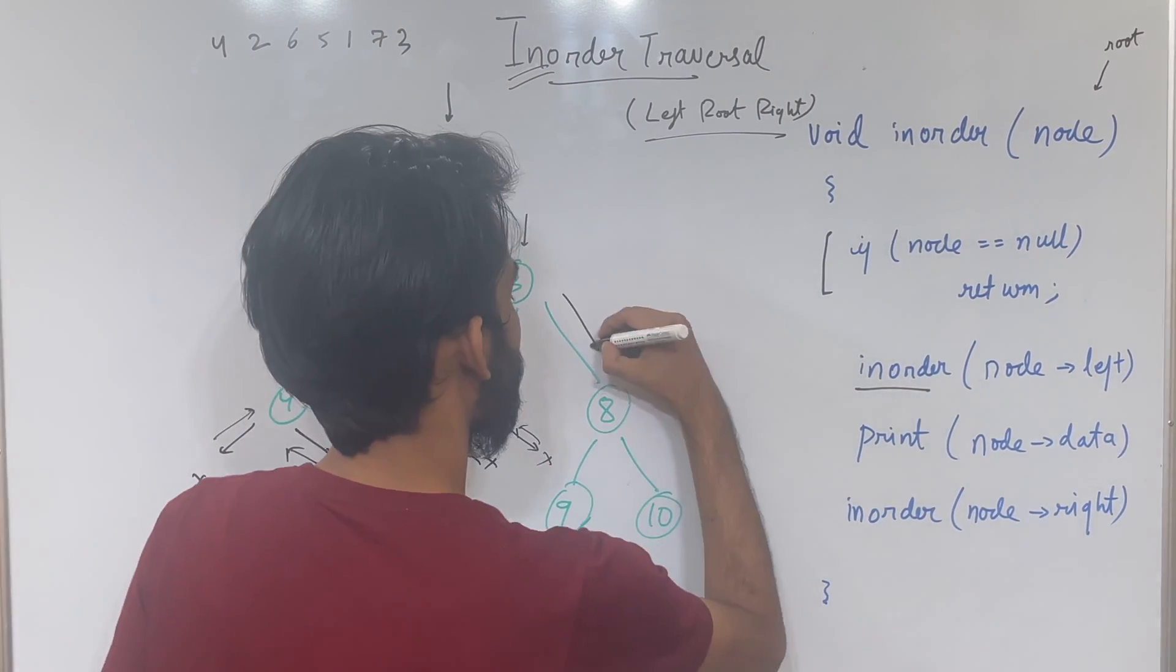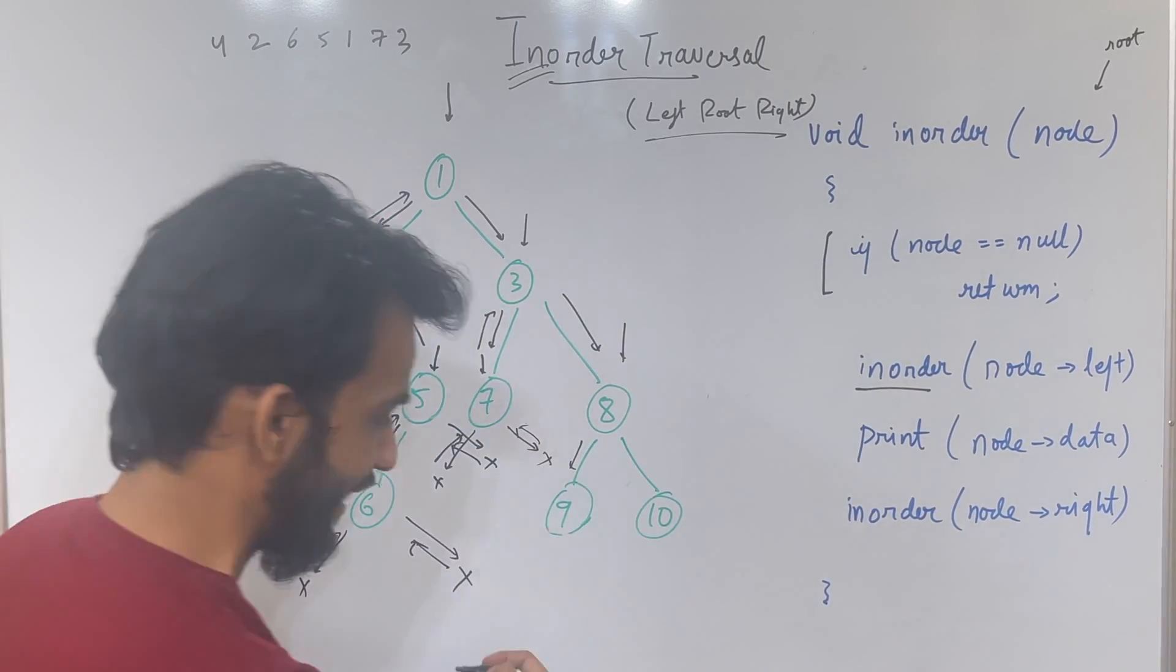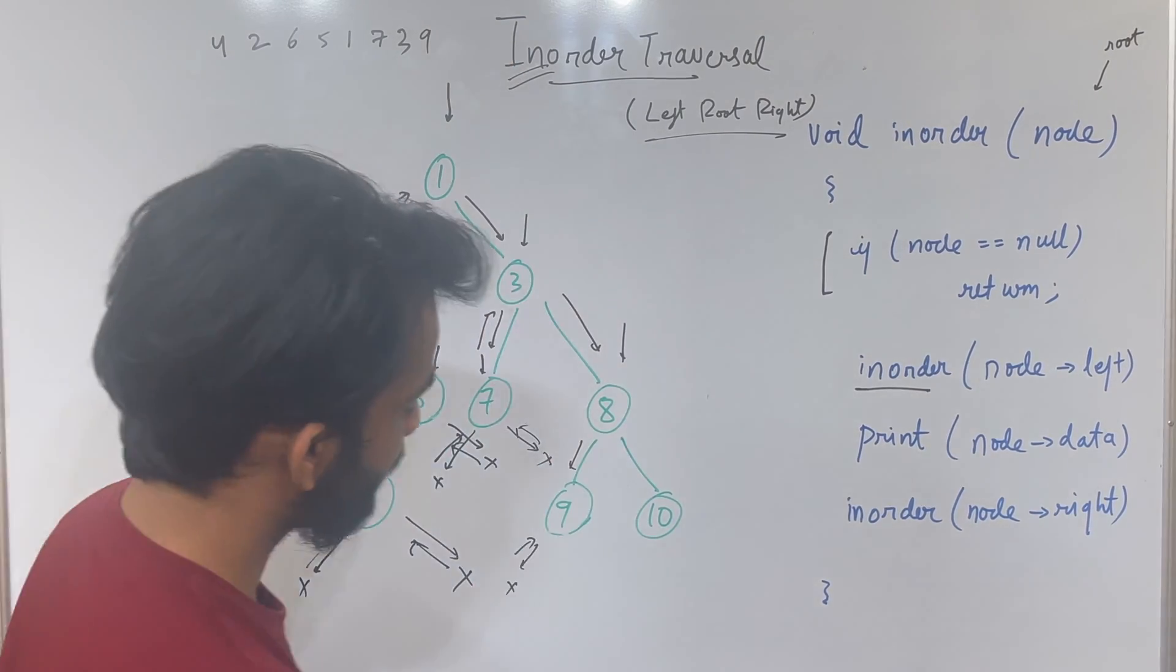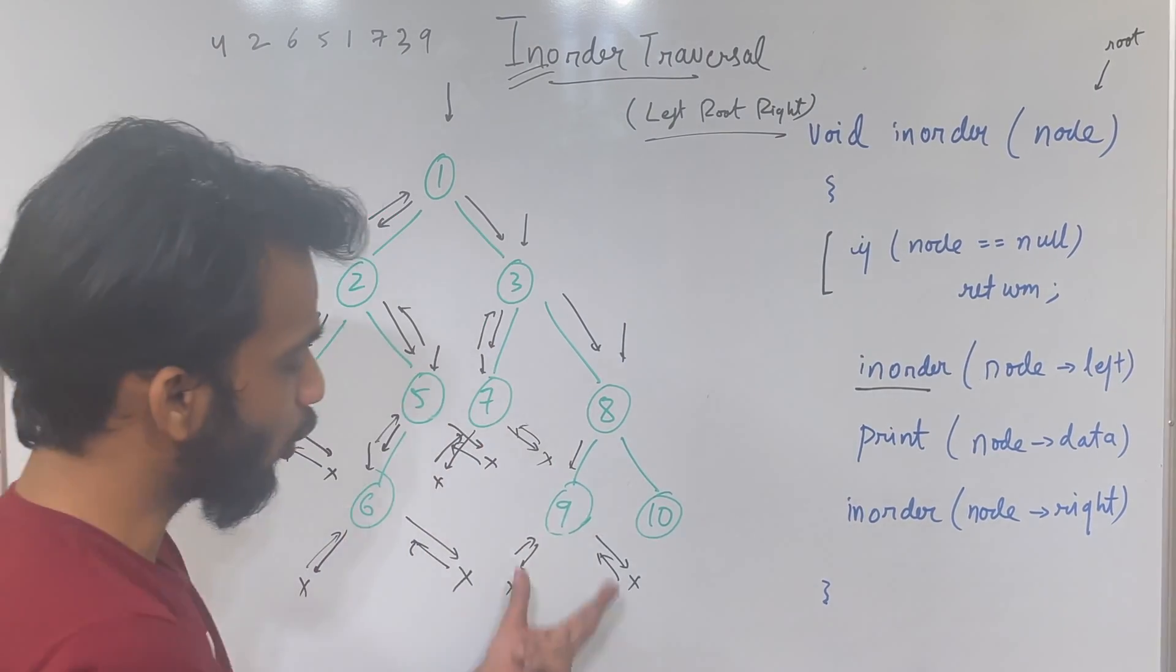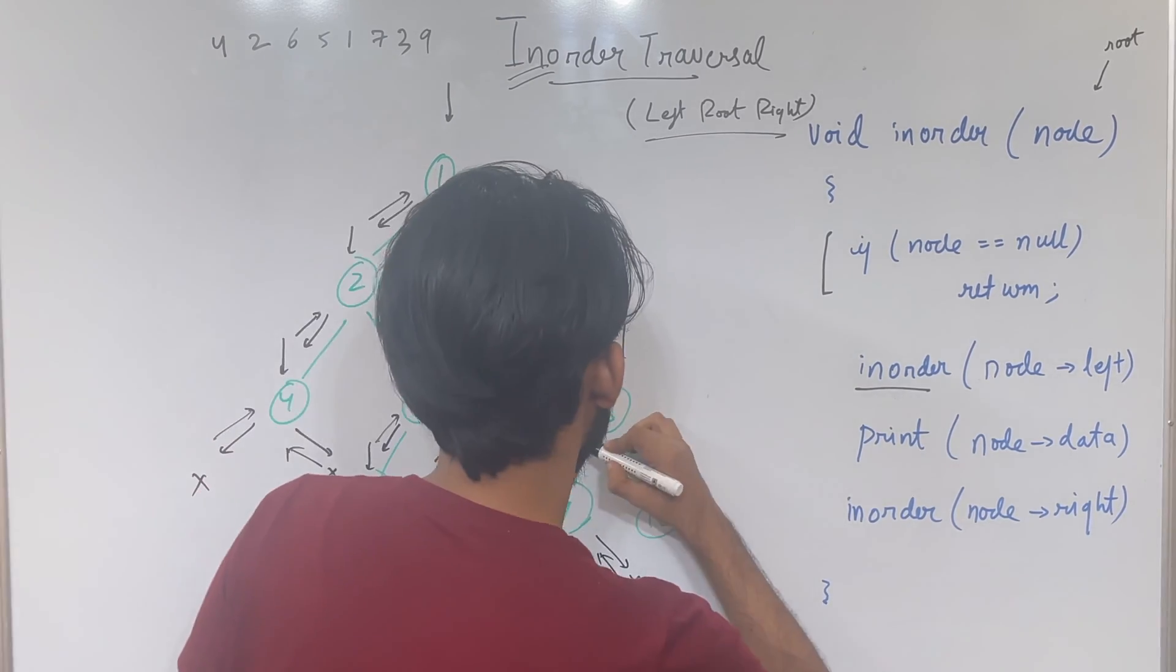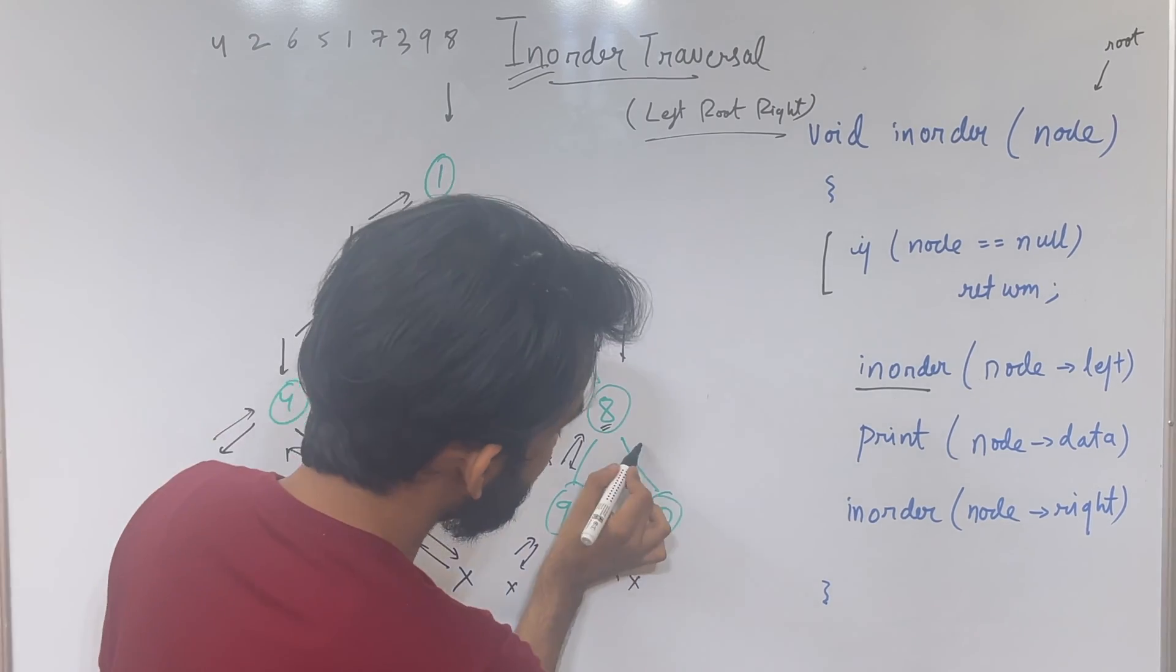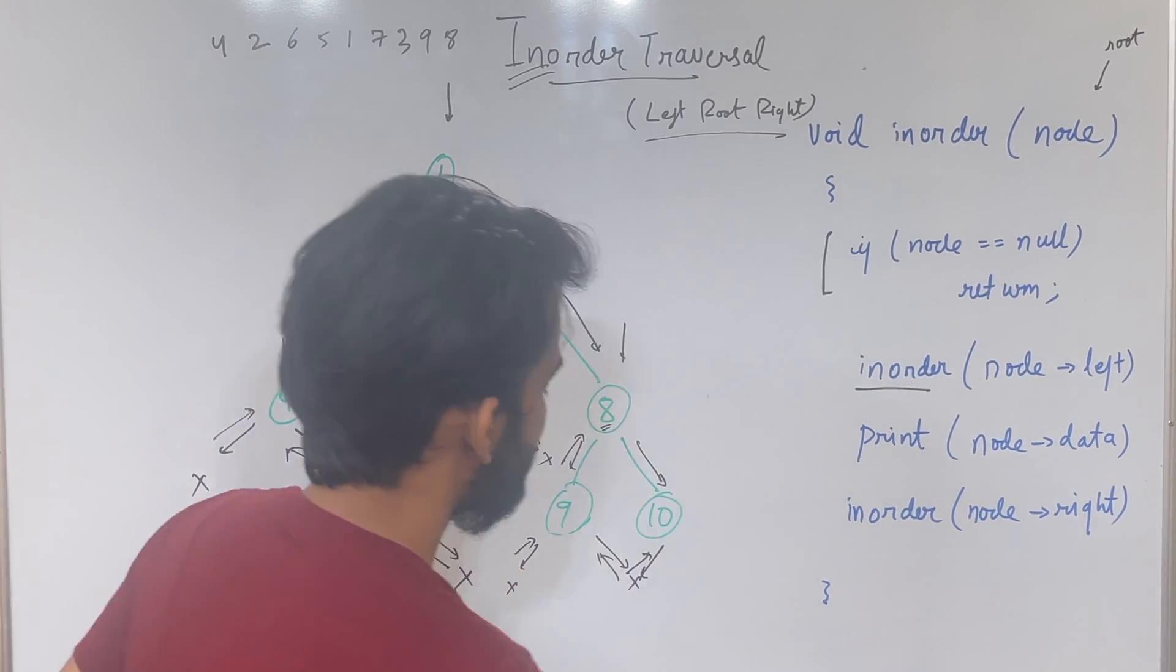Again it will go right. Come to 8. For this node, left. For this node, left. Again it is a null. So it will go back. When it goes back for 9, left is over. So 9 will be printed. It will go right. Again it will find null. So it will go back. So when it goes back, for 9, left is over, printing is over, right is over. So it will go back now. For 8, left is over. So this guy 8 will be printed. Now for 8, left is over, root printing is over. So it will go over here. For 10, it will again call left, which is null. Go back. So for 10, left is over. So it will print 10.